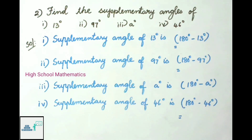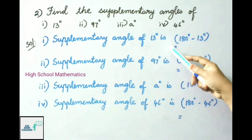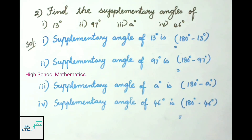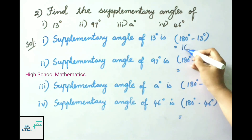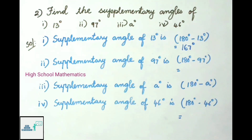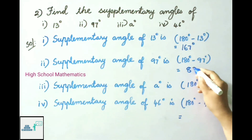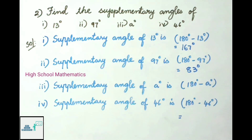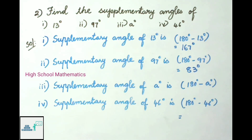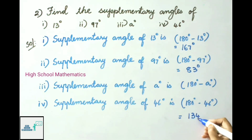Let us see the solution. Supplementary angle of 13 degrees is 180 minus 13 degrees, that is 167 degrees. Second one: supplementary angle of 97 degrees is 180 minus 97, that is 83 degrees. Third one: supplementary angle of 8 degrees is 180 minus 8 degrees. Fourth one: supplementary angle of 46 degrees is 180 minus 46 degrees, that is 134 degrees.